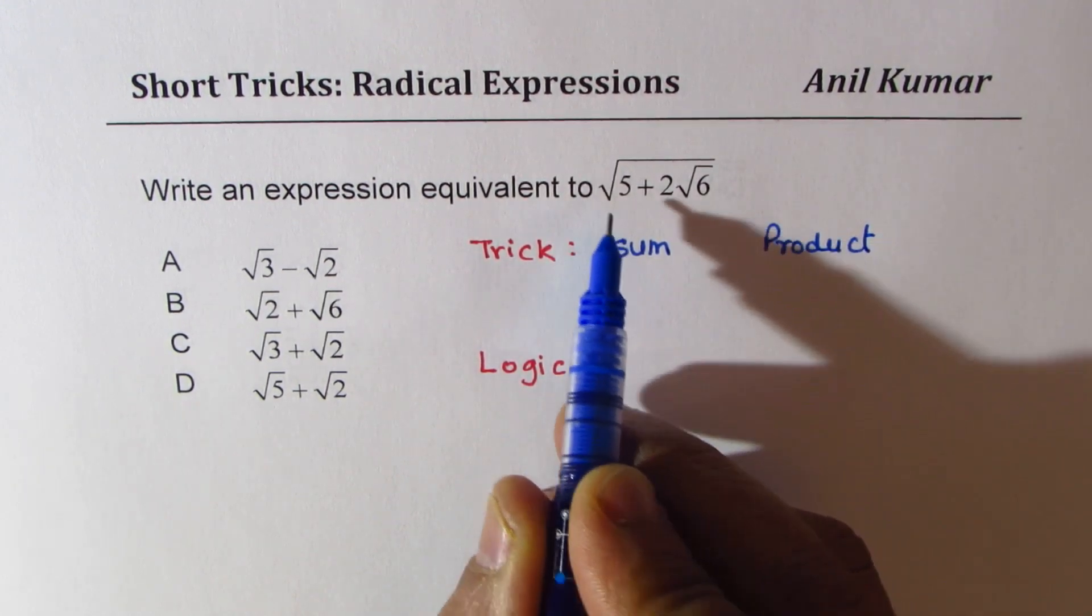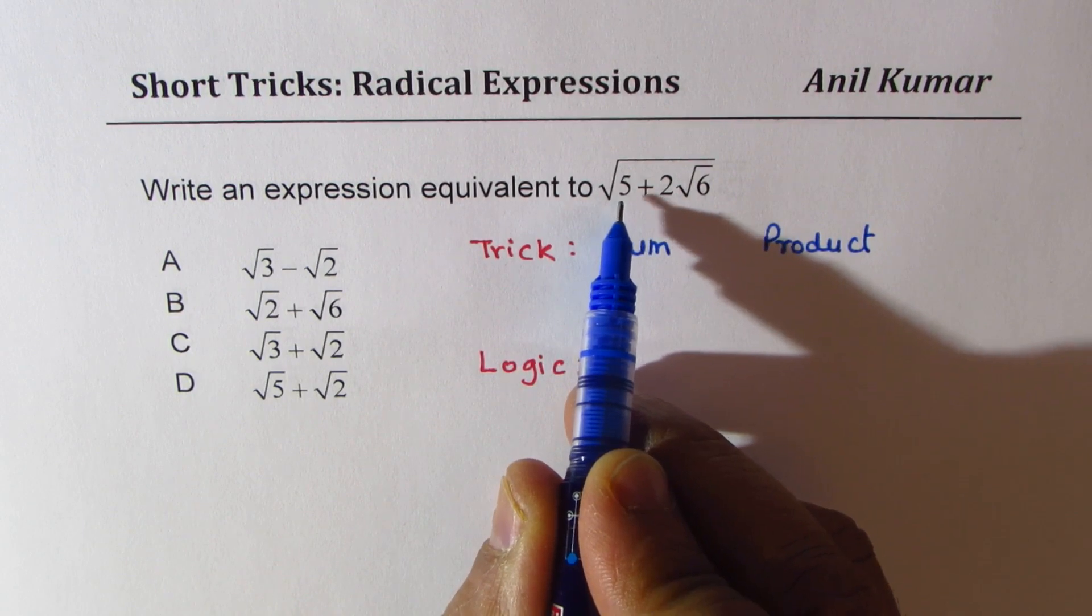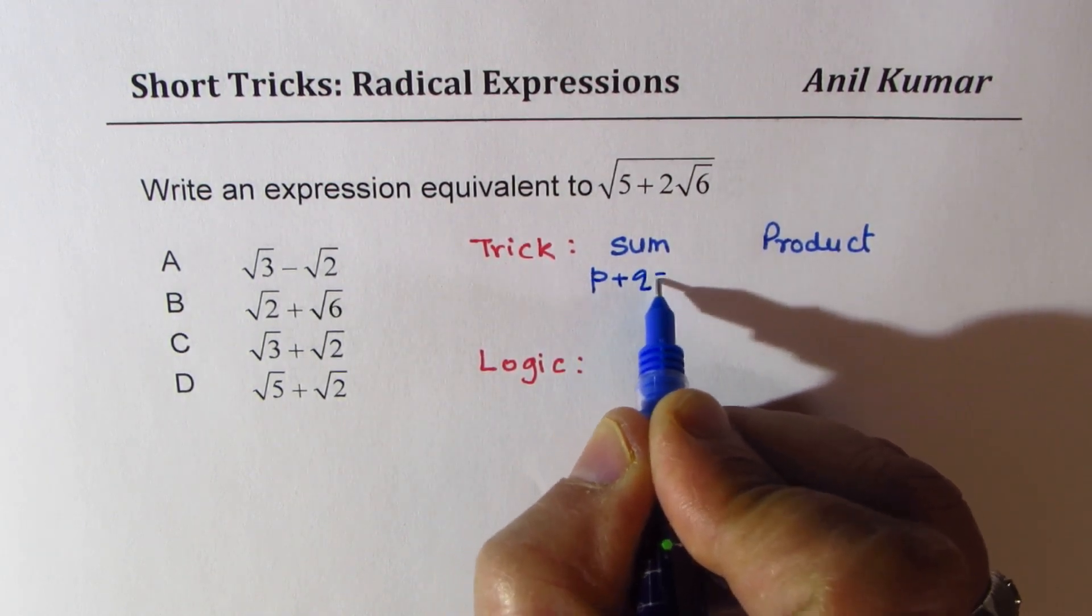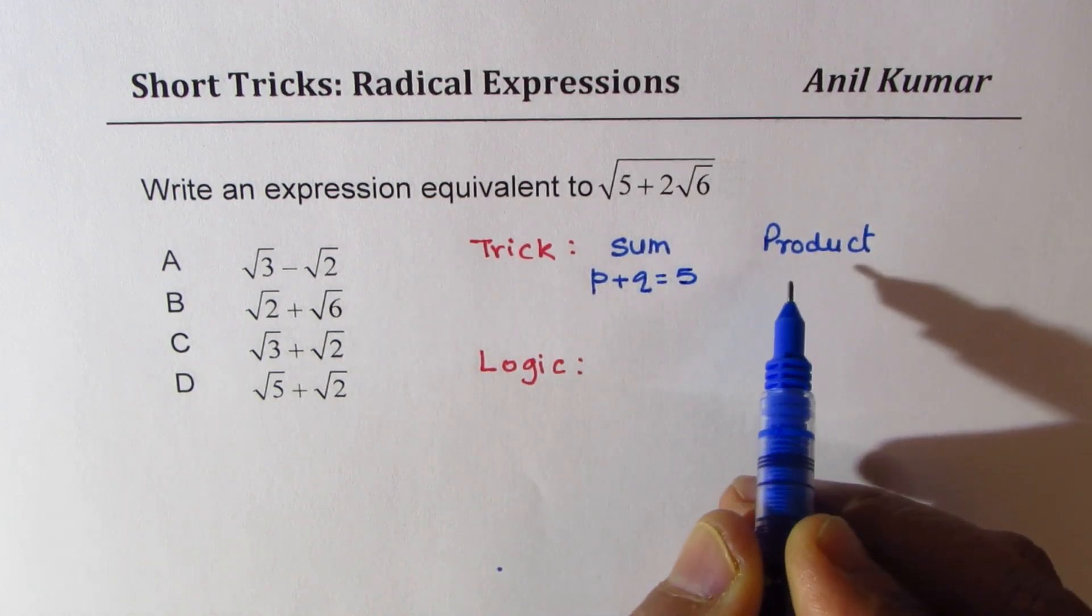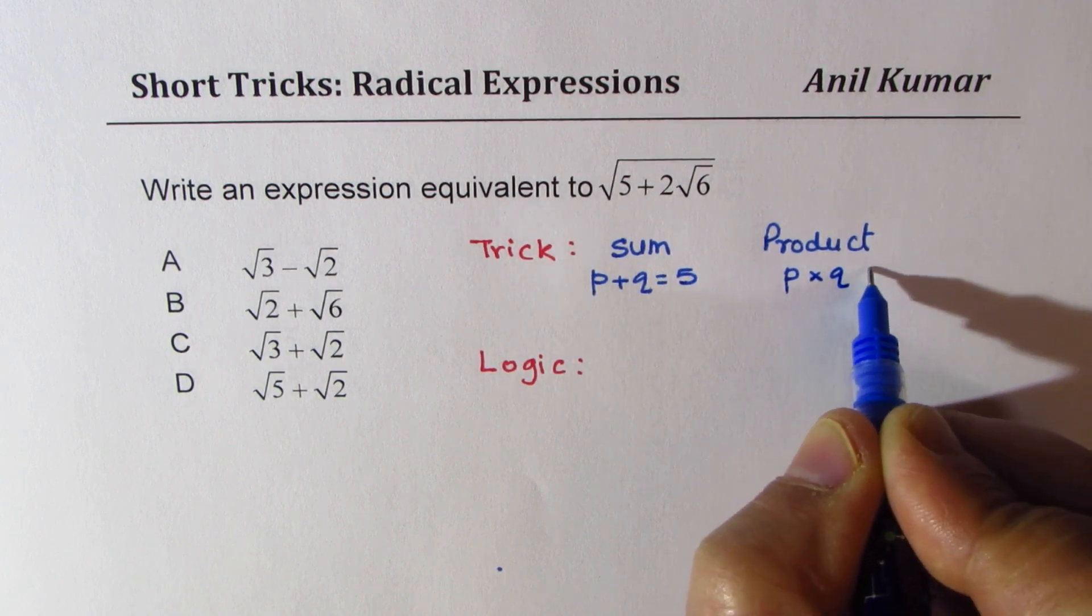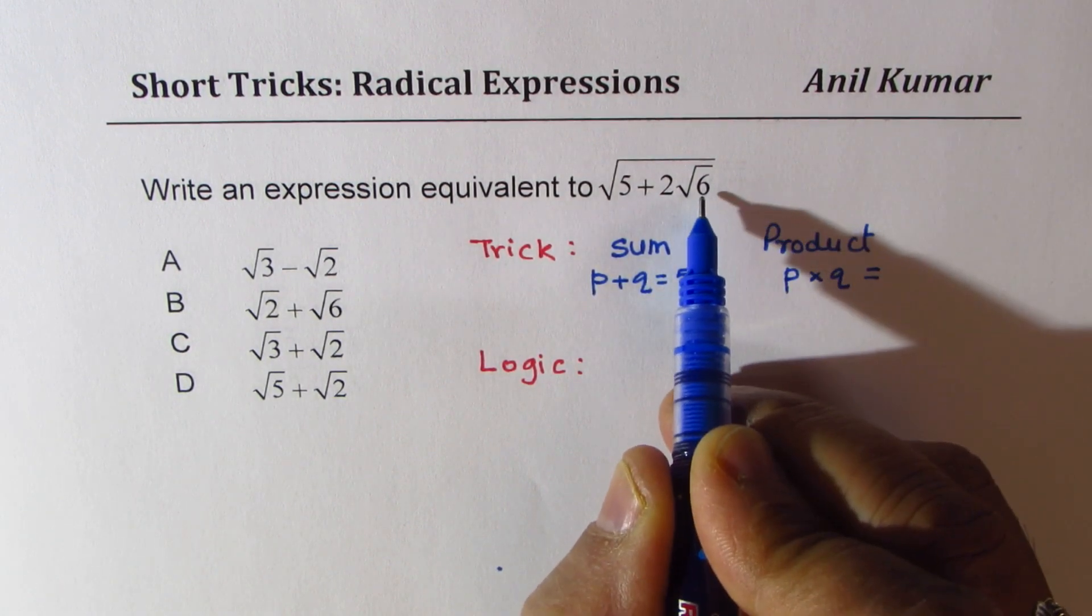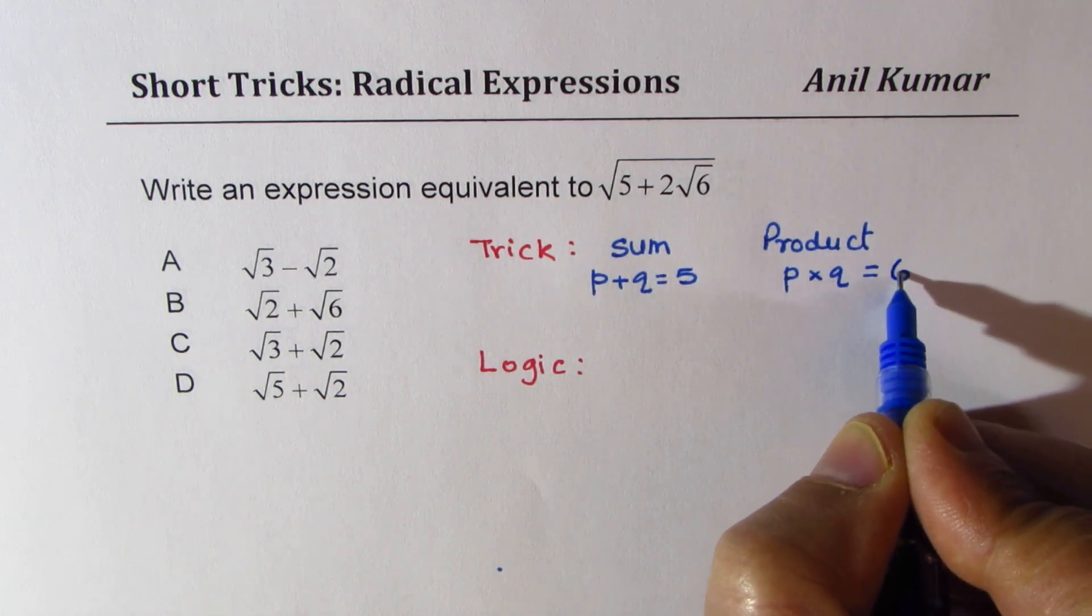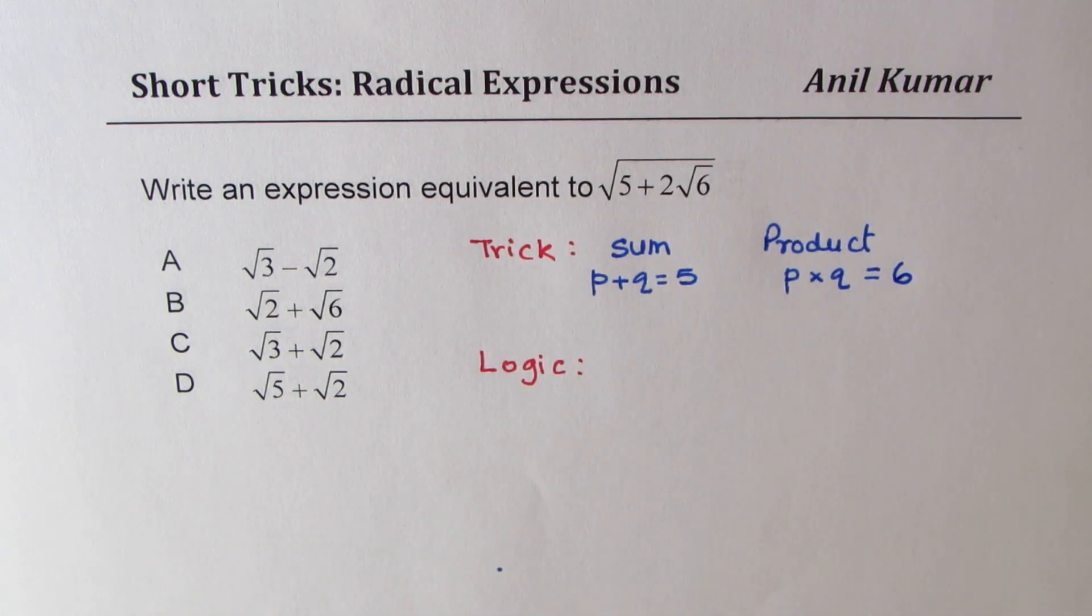We are looking for sum of two numbers to be 5. Let the two numbers be P and Q. So P plus Q equals 5. And we want the product of P and Q as the term within this square root, which is 6. So once you think about it, you know a very simple combination.